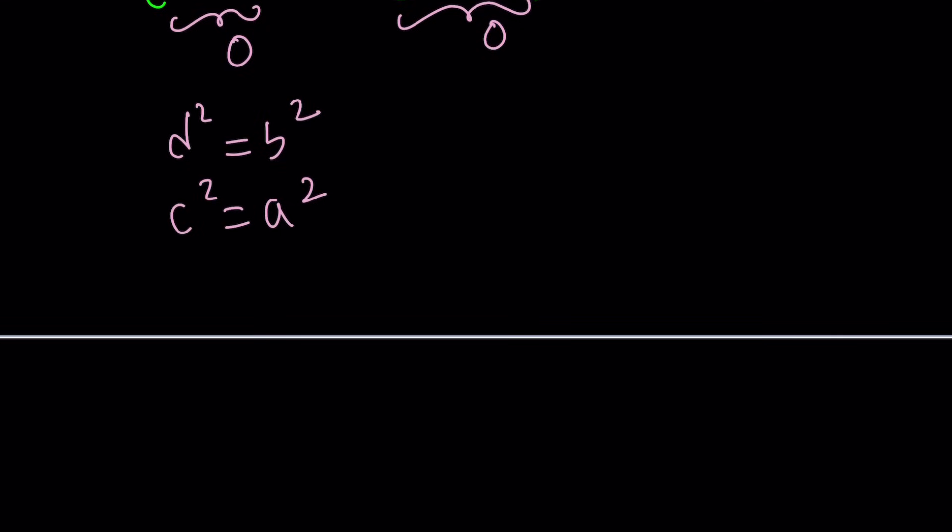From here, we get two solutions. d equals b or d equals negative b. From here, we get two solutions. c equals a or c equals negative a. So we can look at the different combinations. There are four options, 2 times 2, by counting.